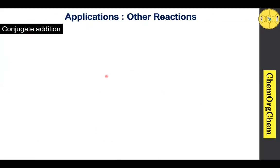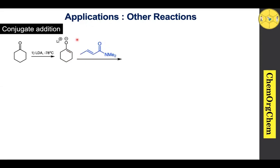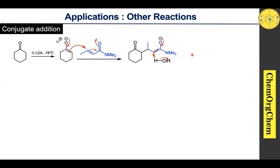LDA is useful for conjugate addition, also known as the Michael reaction. When cyclohexanone is treated with LDA under minus 78 degrees Celsius, it generates the corresponding enolate ion, which then reacts with a Michael acceptor. The electrons move toward the carbon atom, then the pi electrons attack the alkene bond, and the electrons shift toward the oxygen atom, generating a corresponding intermediate. After taking a proton from the medium, the corresponding conjugate addition product is obtained.